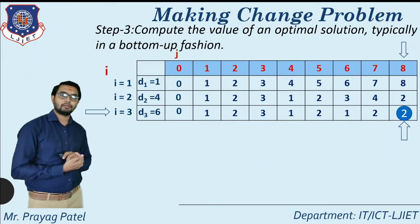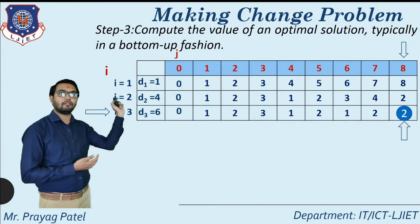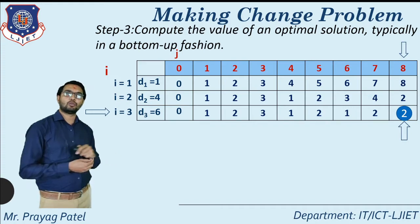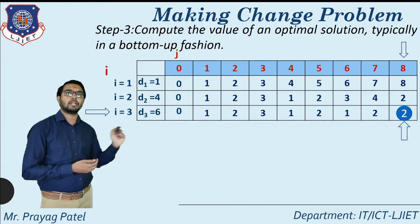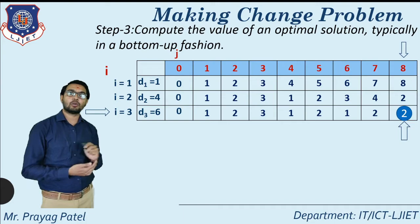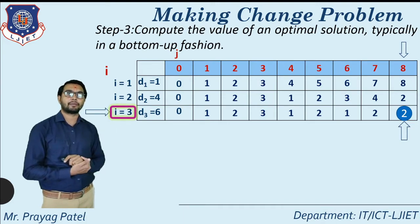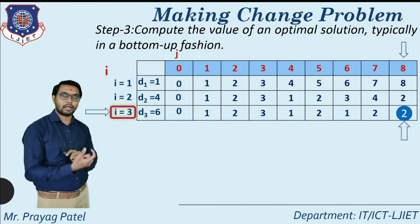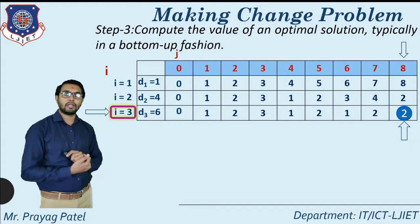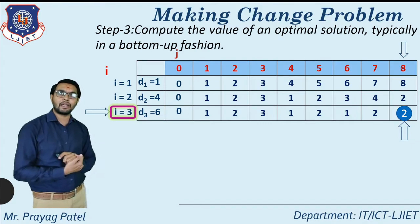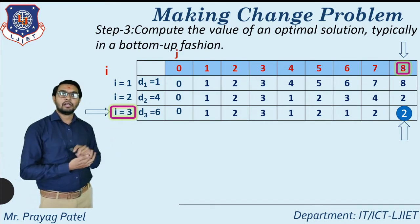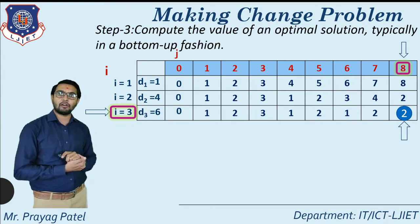In our example we already found all values of table C — rows C[1][0] through C[1][8], C[2][0] through C[2][8], and C[3][0] through C[3][8]. The final answer in this table equals 2, meaning 2 total coins are required. We start with i equal to 3 and j equal to 8, from the last location. This is step number 3 of the making change problem: compute the value of an optimal solution, typically as a bottom-up traceback.